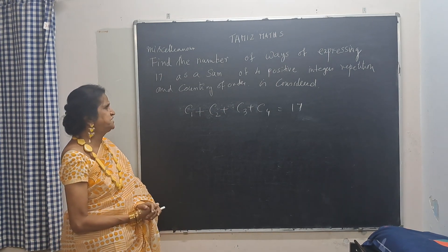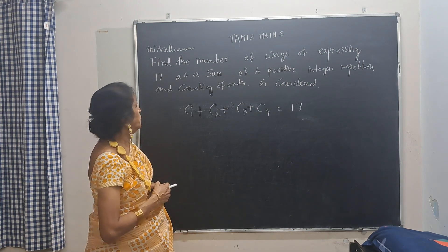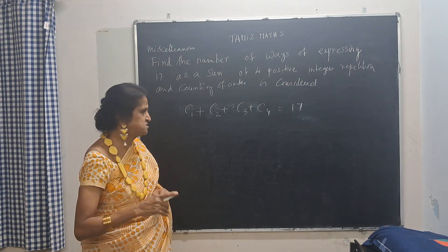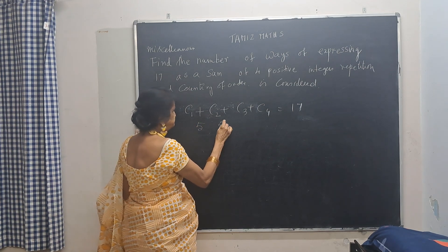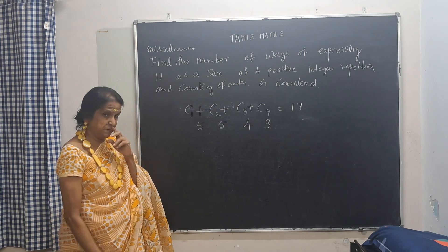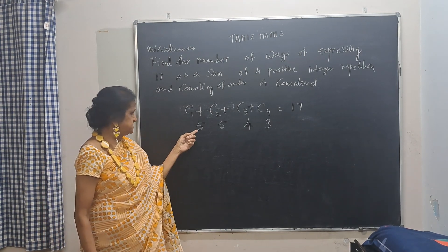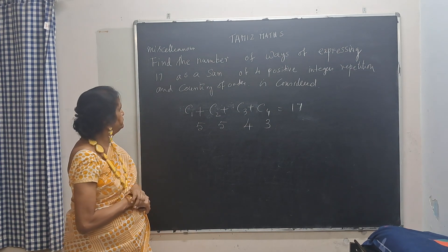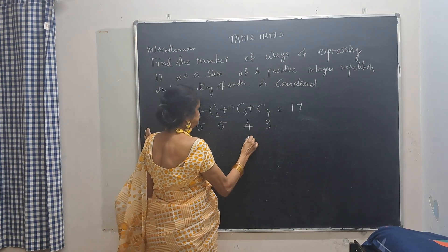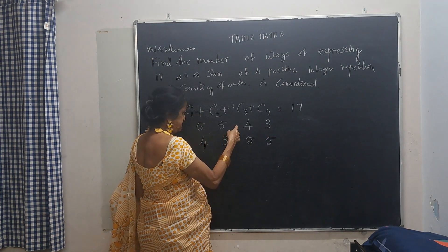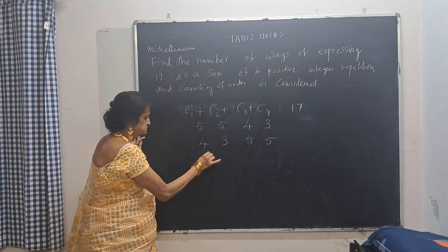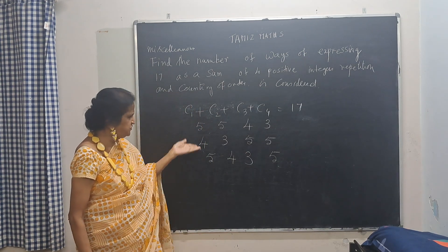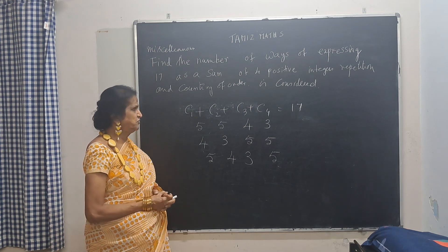Find the number of ways of expressing 17 as a sum of 4 positive integers where repetition and order are also considered. What do you mean by repetition considered? For example, having 5 and 5 — that repetition is allowed. What do you mean by order considered? Having the same set in a different arrangement counts as a different solution. So with the same set 5, 5, 4, 3, we have many different orders.